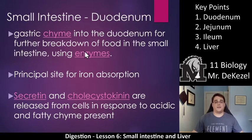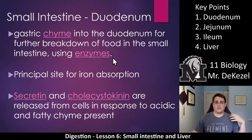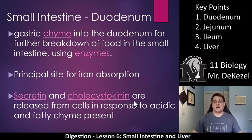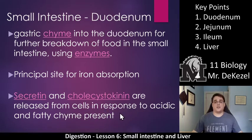The duodenum is the first portion of the small intestine. Gastric chyme moves into the duodenum for further breakdown of food using enzymes. It is the principal site for iron absorption — you need to break down meat into very tiny parts in your stomach first. Secretin and cholecystokinin are released from cells in response to acidic and fatty chyme, essentially neutralizing the acid so it doesn't hurt your small intestine.